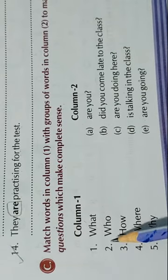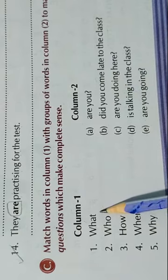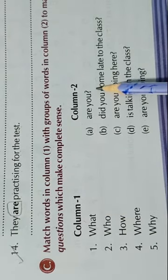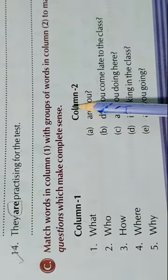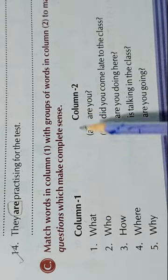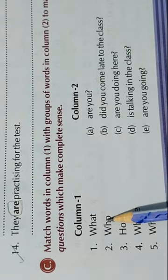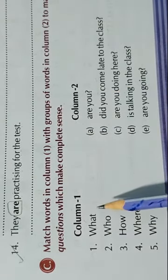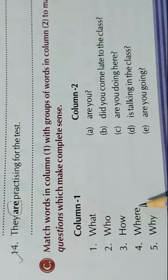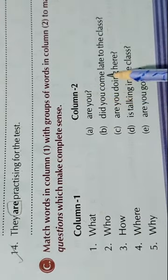And in column 2 some group of words. So what we have to do is match column 1 with column 2 to make complete questions. Aapko questions banani hain which makes complete sense. We have to make a complete question with good meaning. So here question words are there - what, who, how, where and why. And in column 2: are you, did you come late to the class, are you doing here, is talking in the class, and are you going.